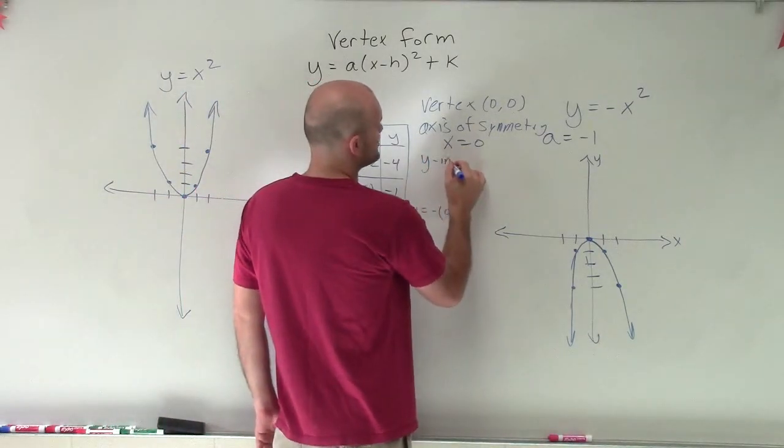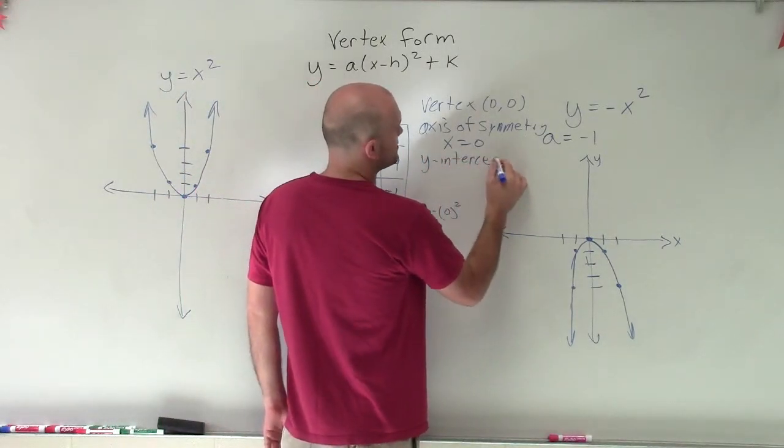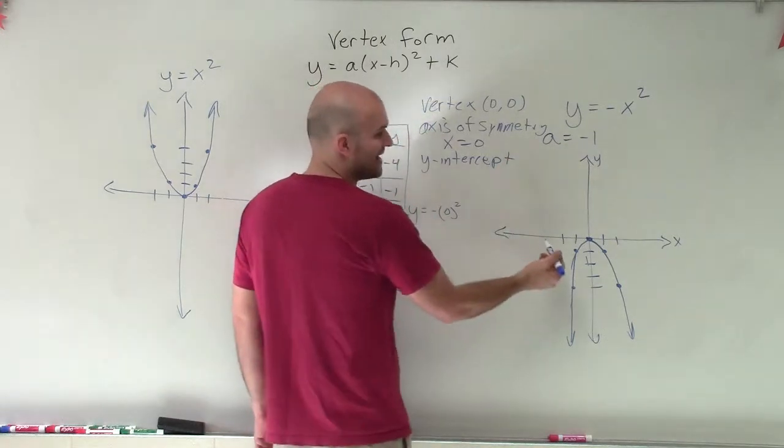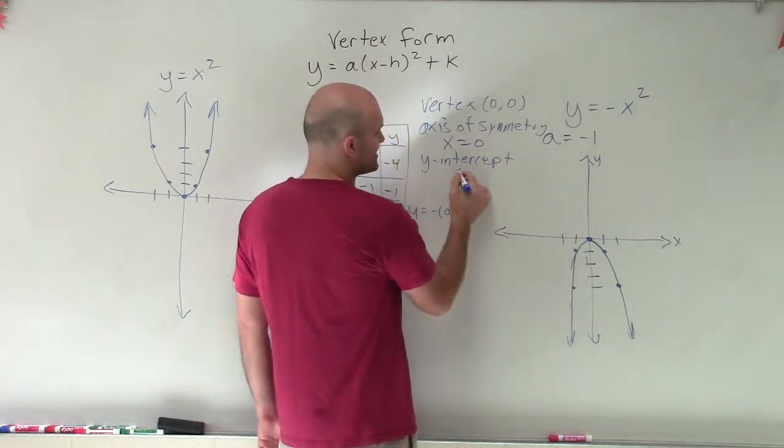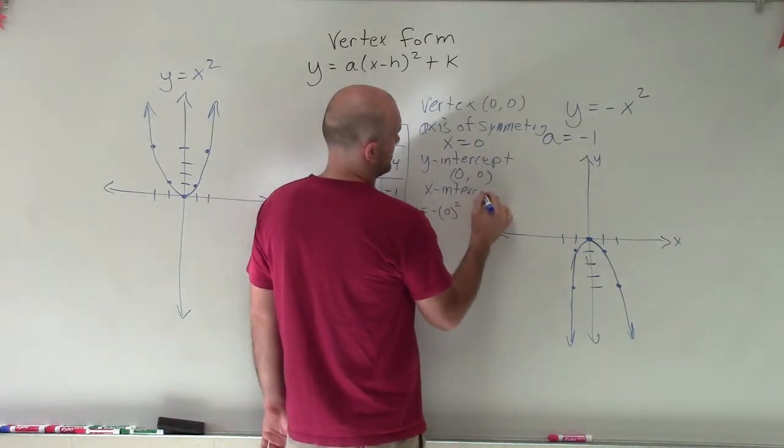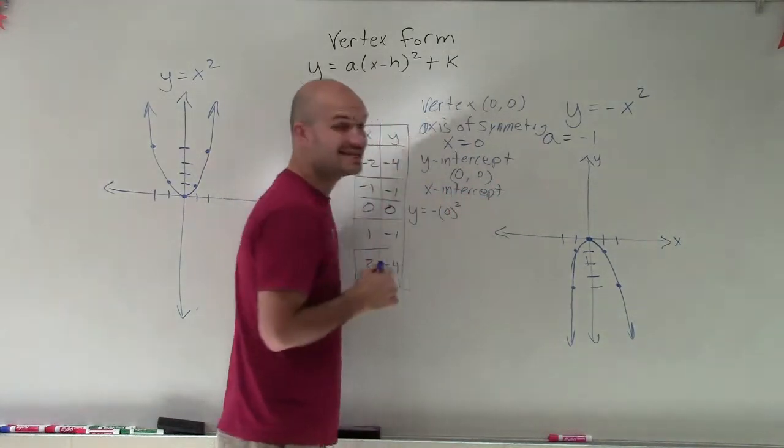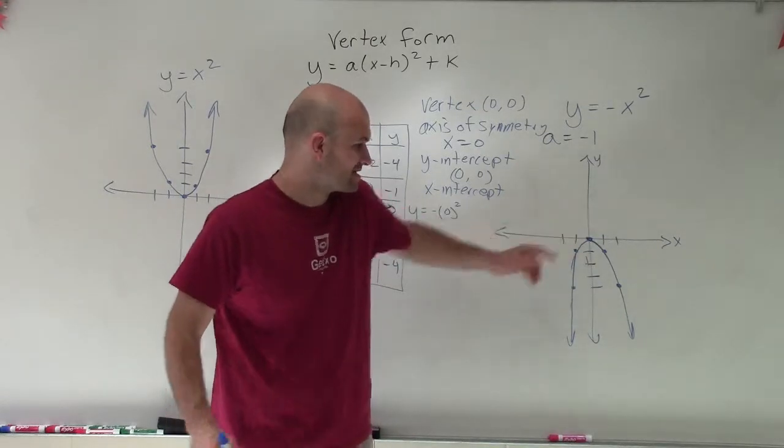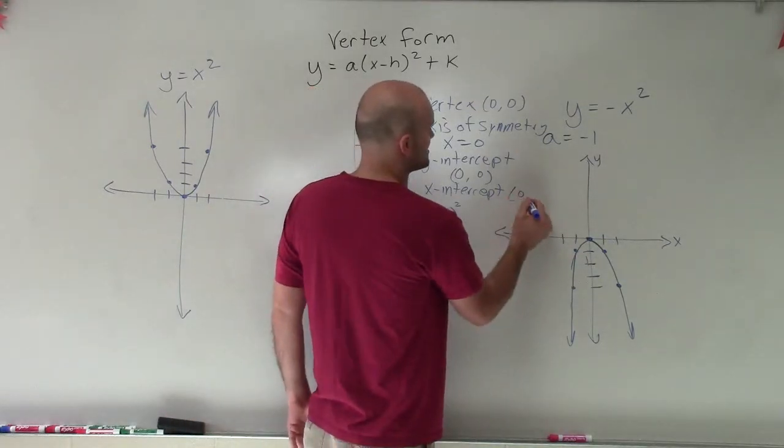Then we look at our y-intercept, and that's where the graph crosses the y-intercept, or y-axis, I'm sorry, and that's at 0, 0. And then the x-intercept, that's where the graph crosses the x-axis. And you can see that the graph actually touches the x-axis at, again, 0, 0.